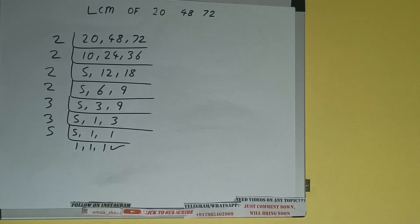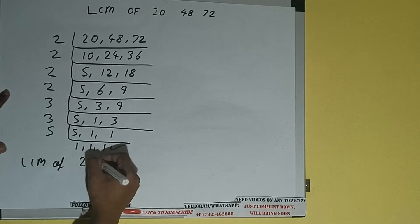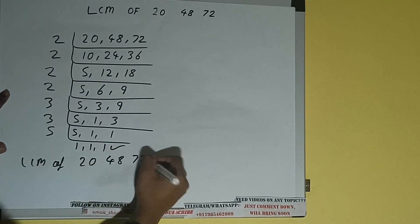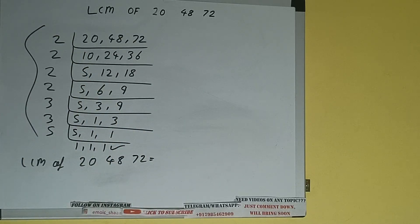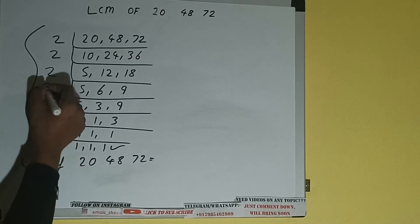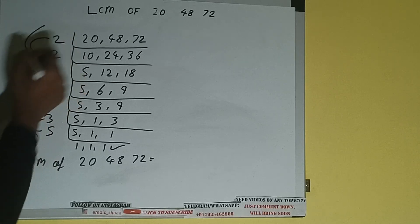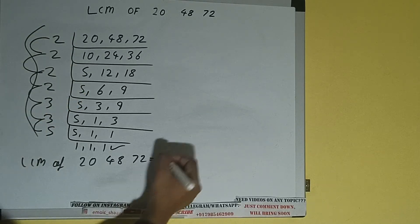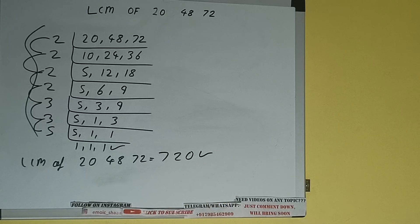Now we do one last thing: the LCM of 20, 48, and 72 equals the product of everything on the left-hand side. So: 5 × 3 = 15, × 3 = 45, × 2 = 90, × 2 = 180, × 2 = 360, × 2 = 720. So the answer is 720.